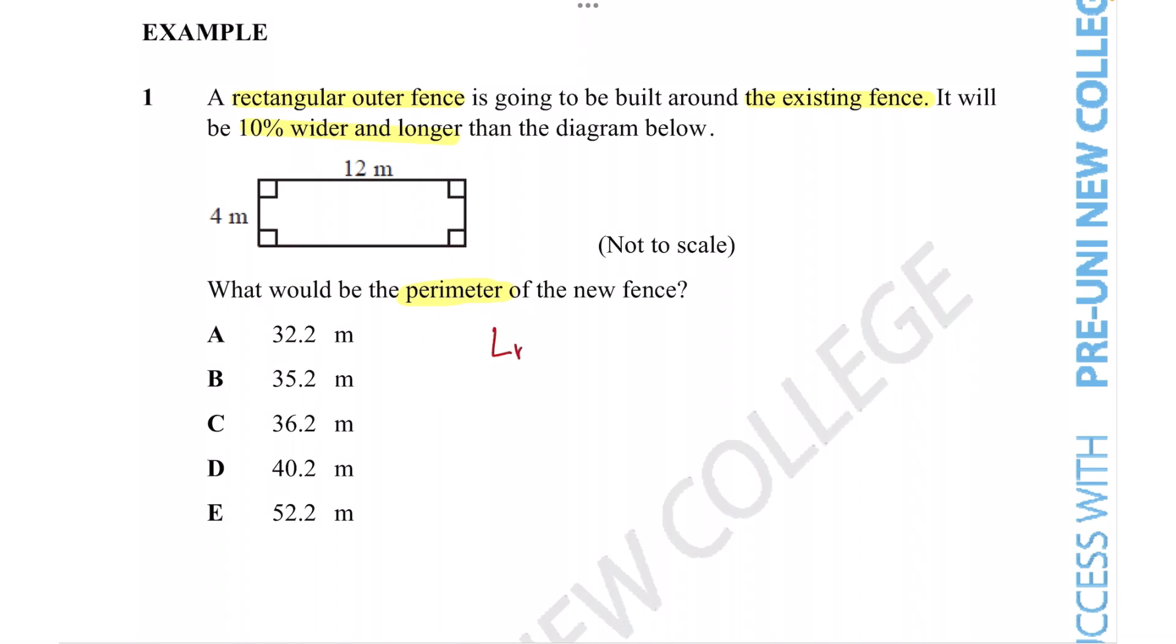Let's figure out the length first. The length of the rectangle is 12 meters. We need to figure out the length of the new rectangle to find the answer. We're told that the length is going to be 10% longer than the original length, so we're adding on 10% more of the original length.